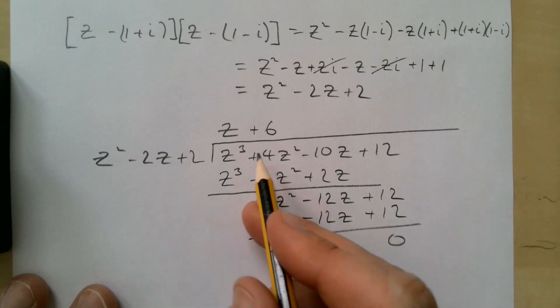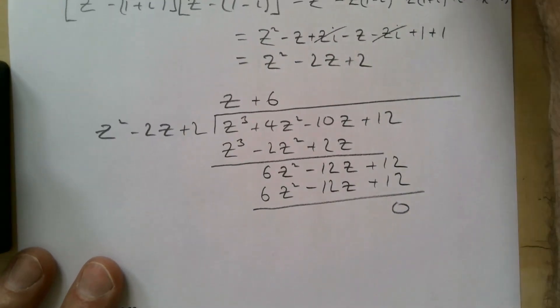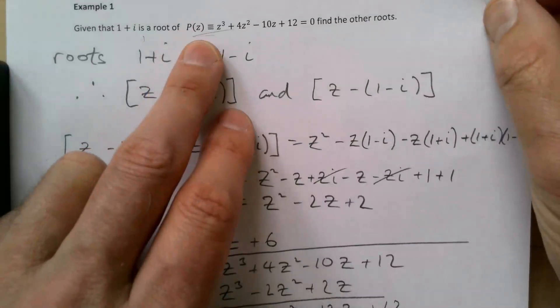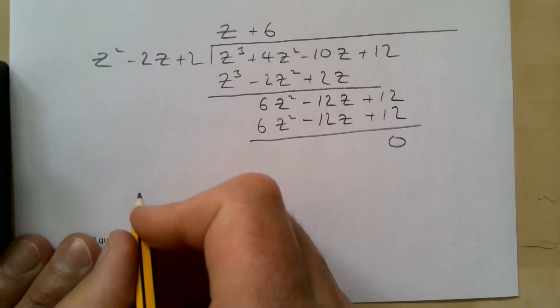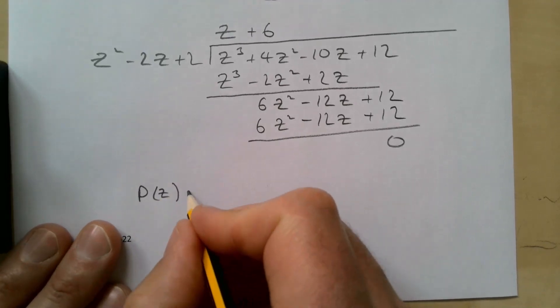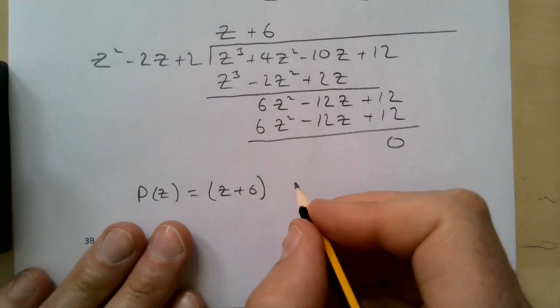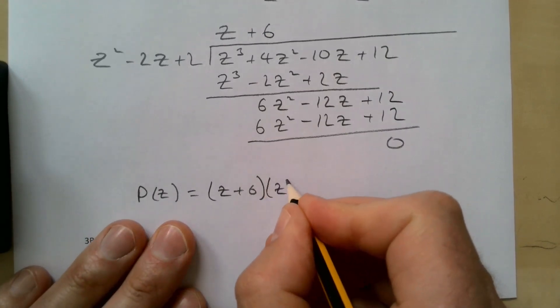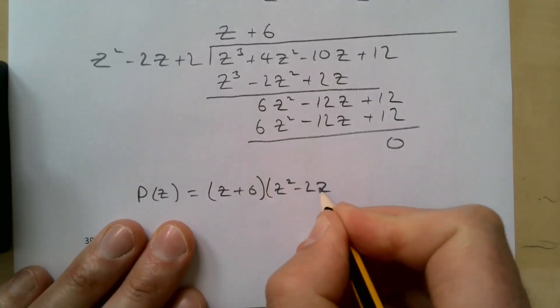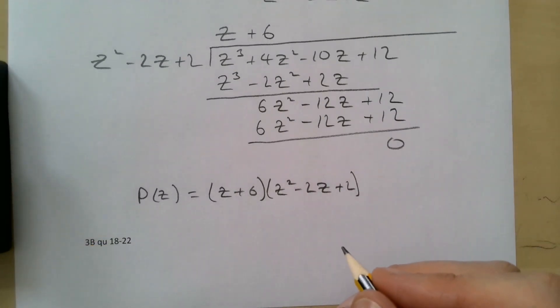If you don't get a zero there, it's not a factor, you've done something wrong. So we can rewrite our original P(z) then as (z+6)(z² - 2z + 2).